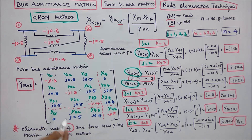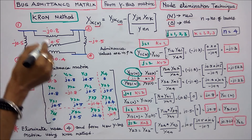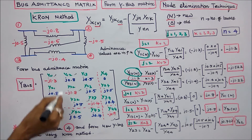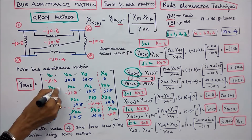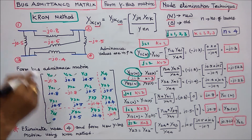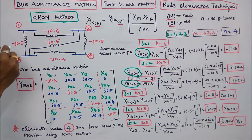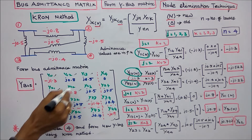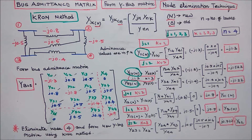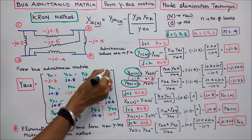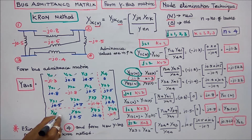Next we have to find the off-diagonal elements. Y12 equals minus of minus j0.8, which is plus j0.8, and by symmetry Y21 equals plus j0.8. Y13 equals minus of minus j0.5, giving plus j0.5, and Y31 equals plus j0.5. There is no line between buses 1 and 4, therefore Y14 equals 0 and Y41 equals 0.